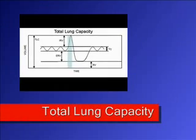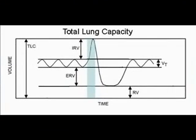The total lung capacity is the amount of gas in the lungs after a maximal inspiration. So if you take a big deep breath in and hold it, the volume of gas in your lungs is the total lung capacity. Therefore, it includes the inspiratory reserve volume, tidal volume, expiratory reserve volume, and the residual volume. Normally it is about 6,000 mLs for adult males and 4,200 mLs for adult females.